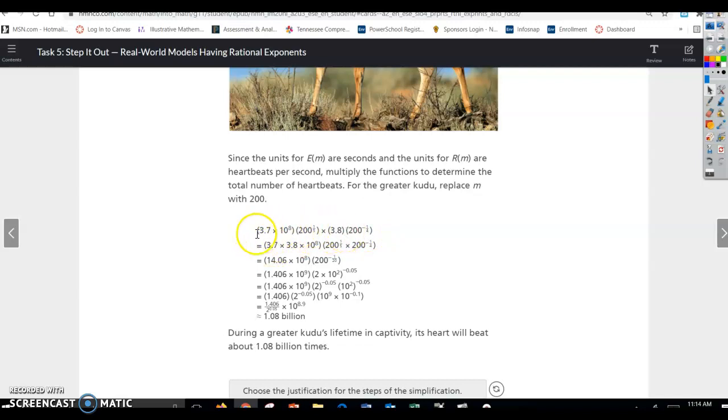Now they're going to rearrange this, just using associative property, and put these numbers that have common things together. So you can see that here they have the same base of 200 raised to an exponent. Over here, they've put the numbers together, and that way they can keep using scientific notation the way it meant to be. So if you multiply 3.7 times 3.8, that gives you 14.06. Scientific notation has to be a number between 1 and 10. So to make this number between 1 and 10, you're going to move the decimal one place to the left. So this goes down 1, the exponent goes up 1.